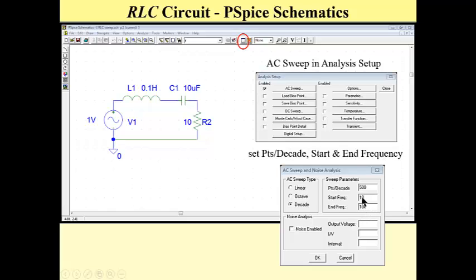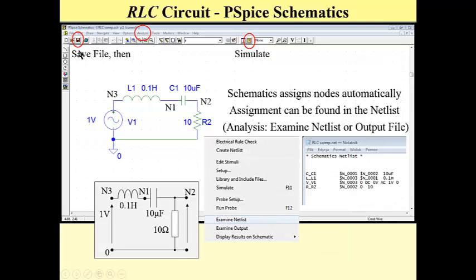Now we may start. First we have to save this file, then we may start simulation. Obviously, assignment of nodes is not clear here. To find this assignment, we have to examine the netlist using this Analysis menu, Examine Netlist, and we have a netlist here. Or we may read this netlist from the output file.